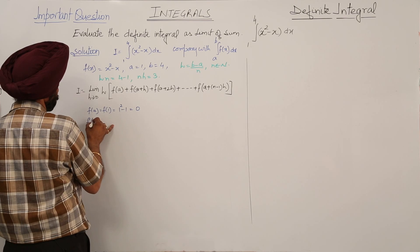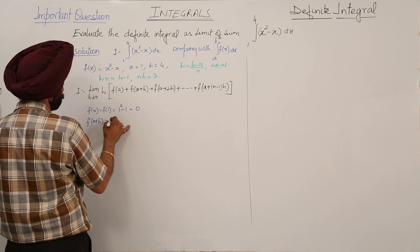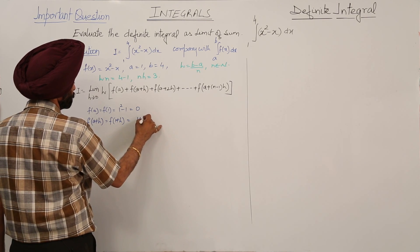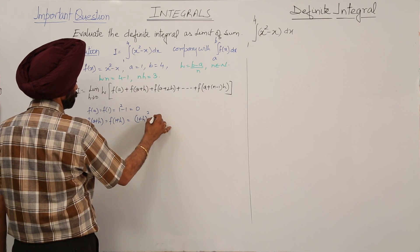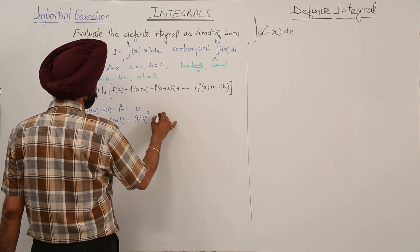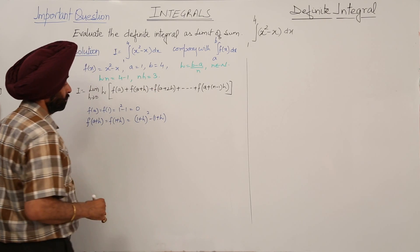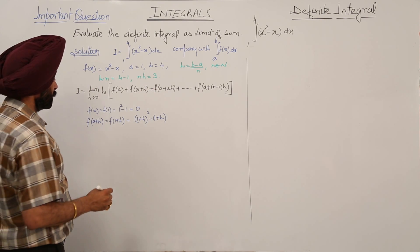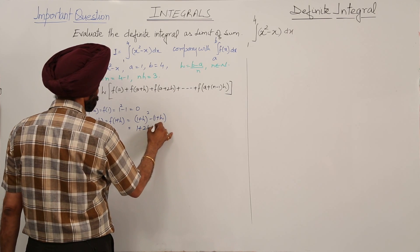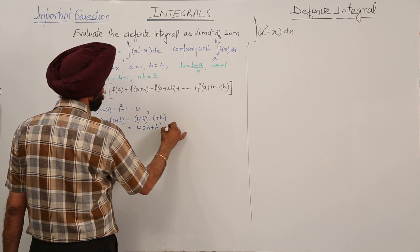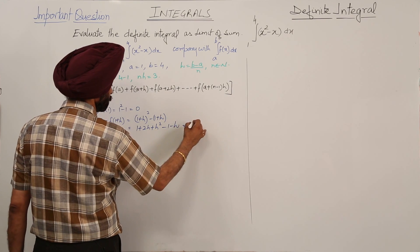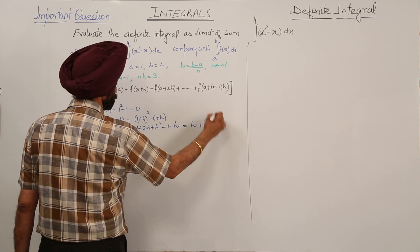For f(a+h): f(1+h) = (1+h)² - (1+h) = 1 + 2h + h² - 1 - h. So we are left with h + h².